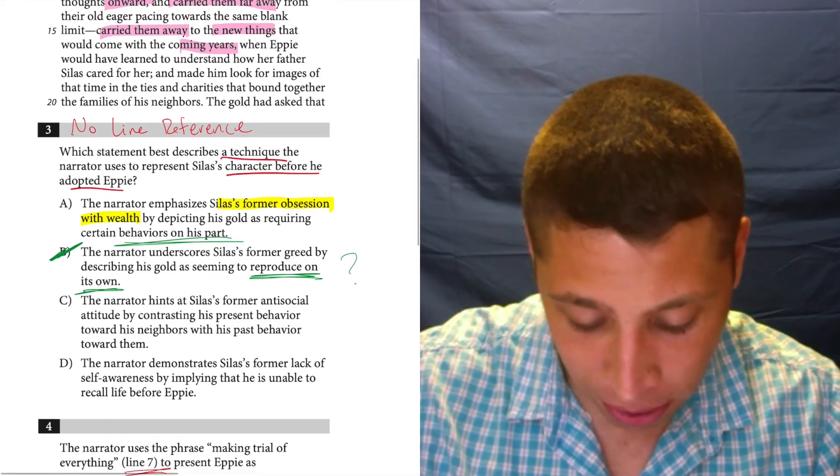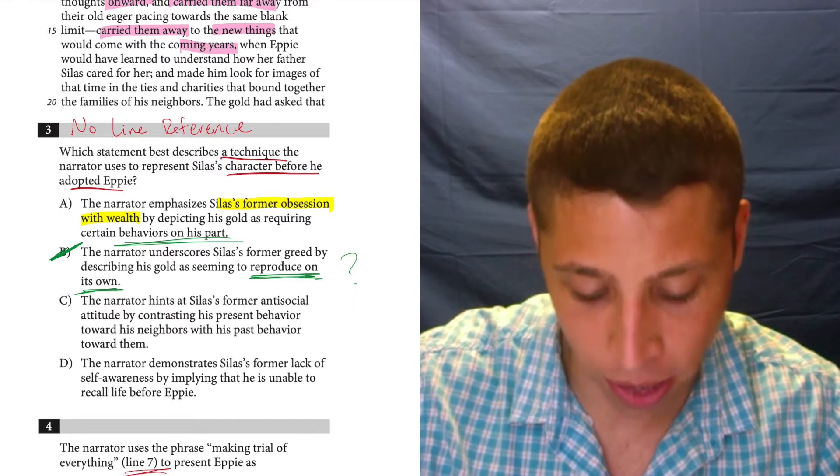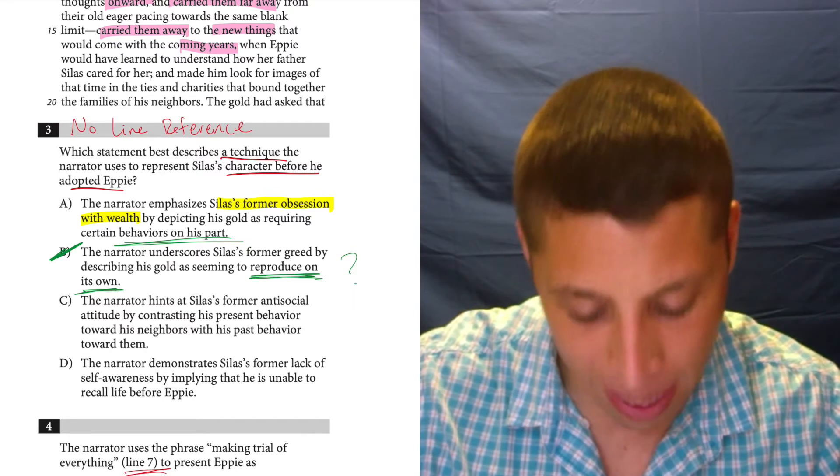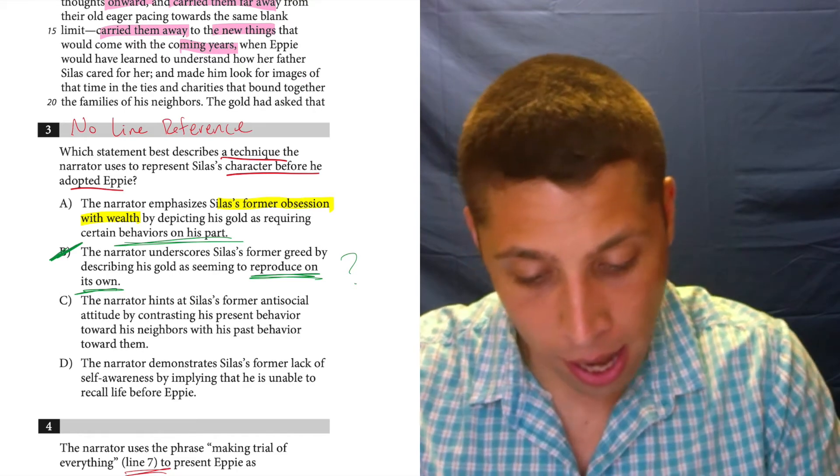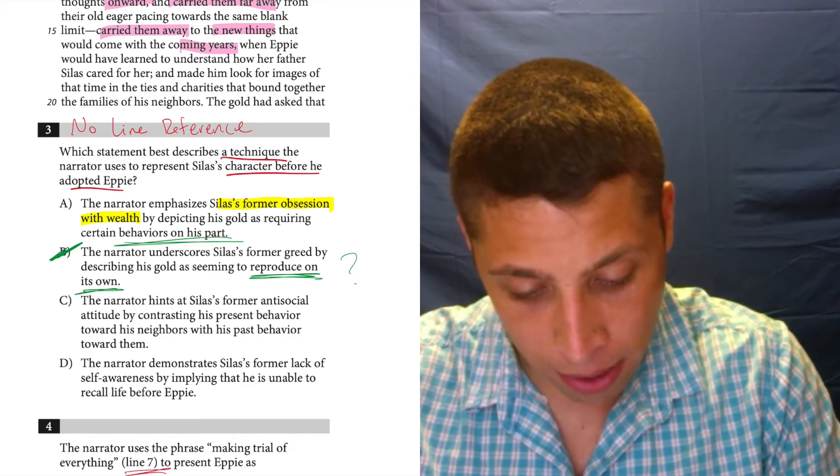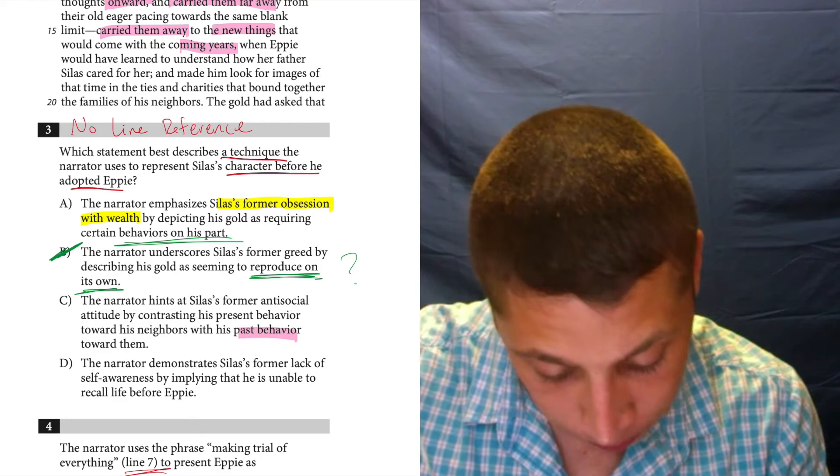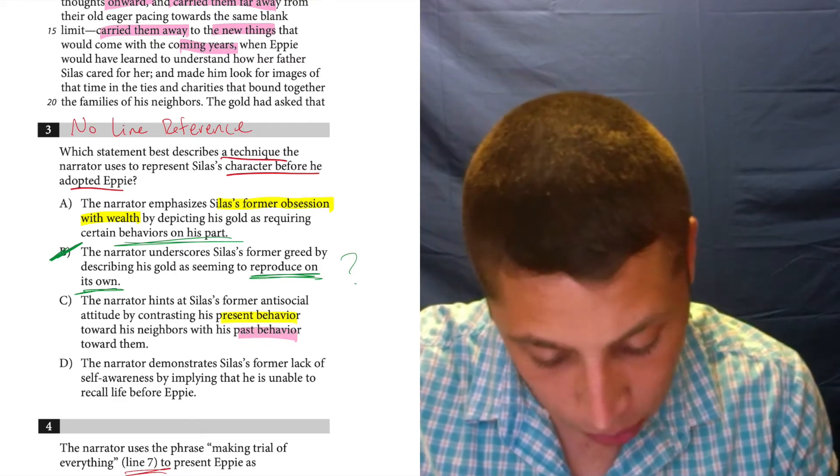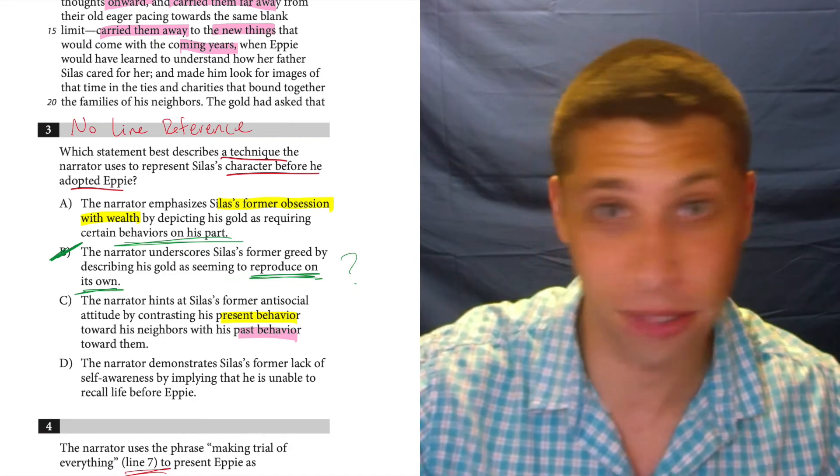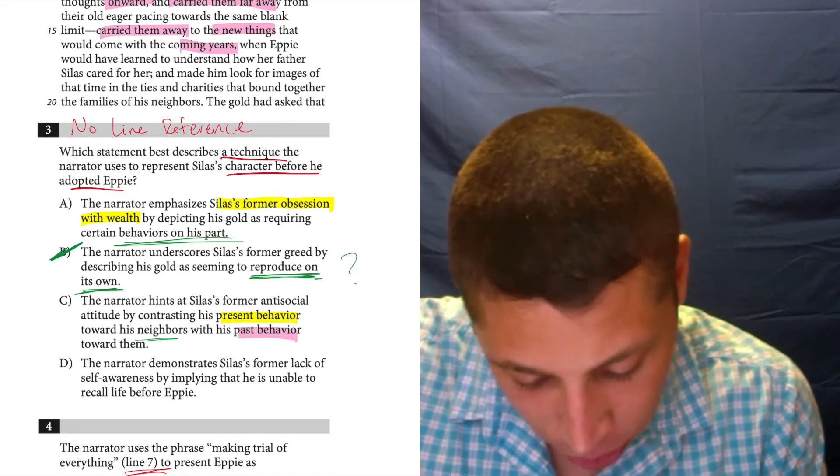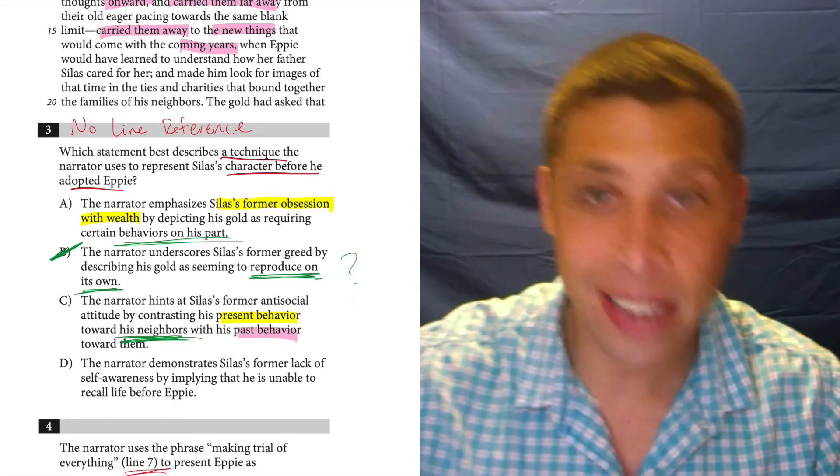Maybe you're just misreading the question. I don't really know, but this is just like a nonsense choice to me. I don't know what they even mean by the gold reproducing on its own. And the fact that I'm confused by that is not a great sign. That probably means it's nonsensical. C, the narrator hints at Silas's former antisocial attitude by contrasting his present behavior toward his neighbors with his past behavior towards them.